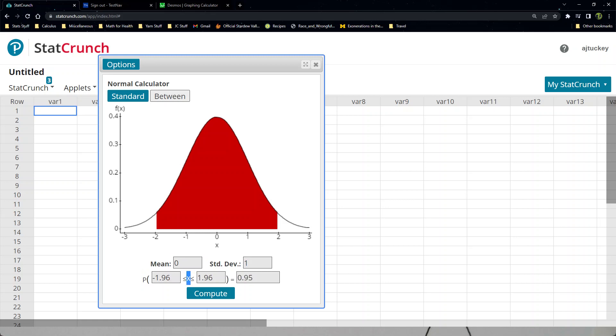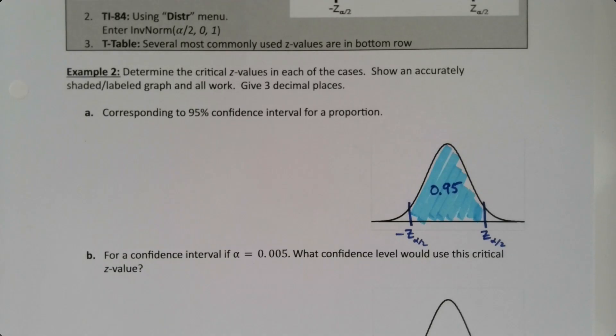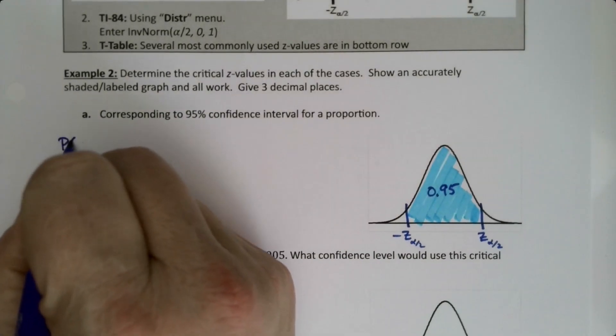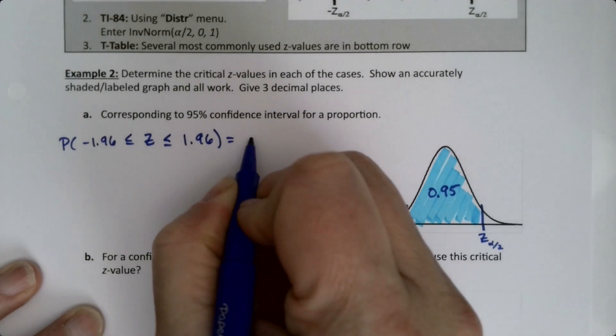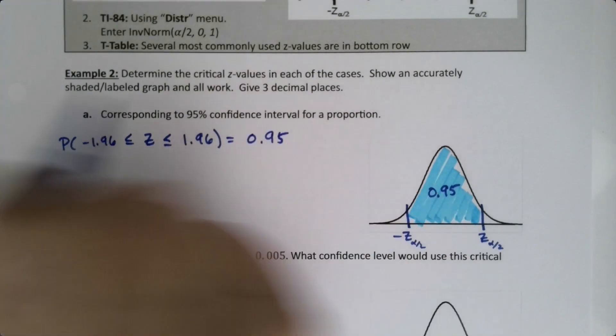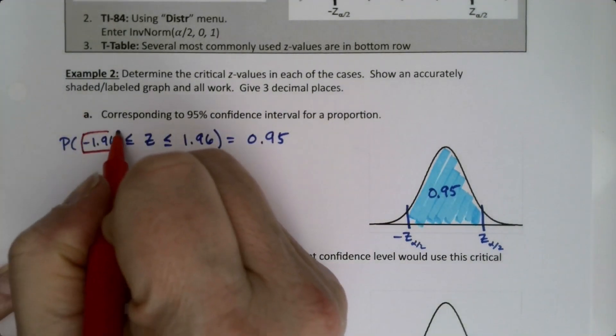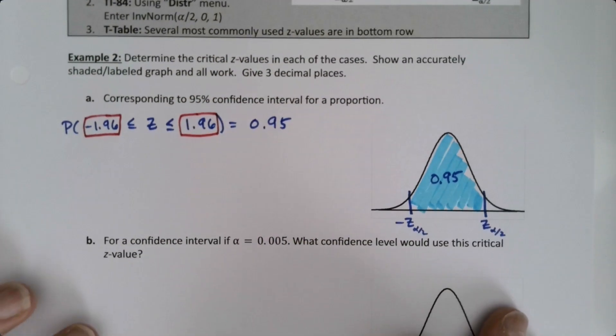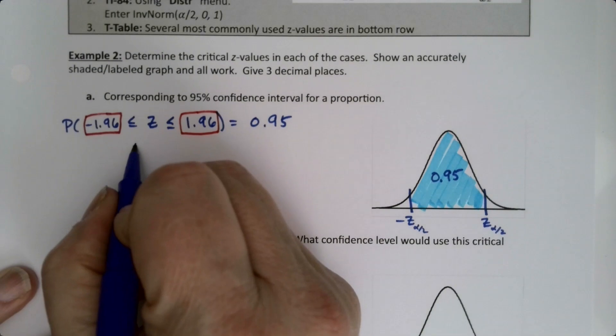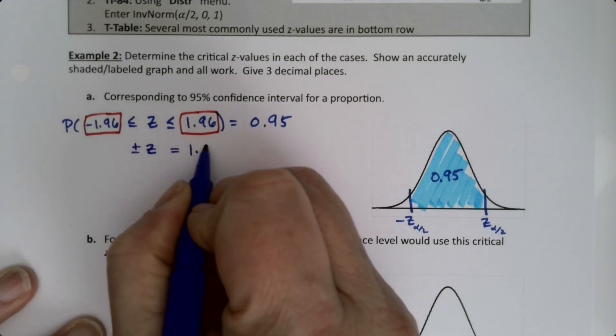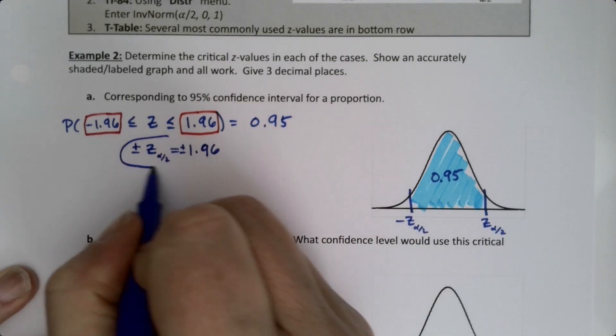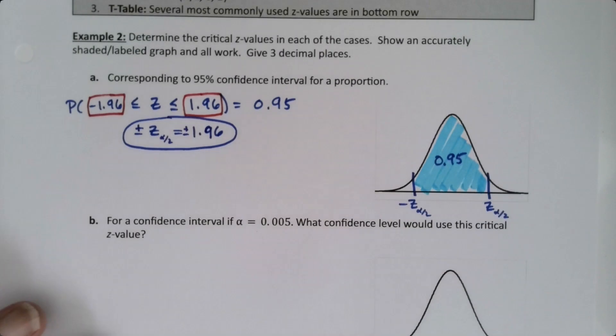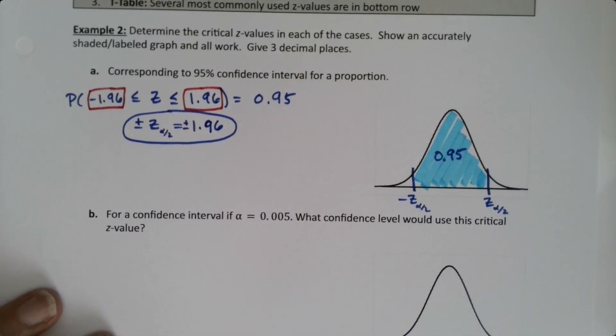Now, it says x in there, but we know this is actually a z. And the computer doesn't know to change it. And that's okay. All right, so let me write that out. So the probability that negative 1.96 is less than or equal to z, which is less than or equal to 1.96, equals 0.95. So your answers are this value and this value. That's it. Another way to say that is plus or minus z equals plus or minus 1.96. And again, if you want to write the alpha over 2, that's fine. It's not strictly necessary.